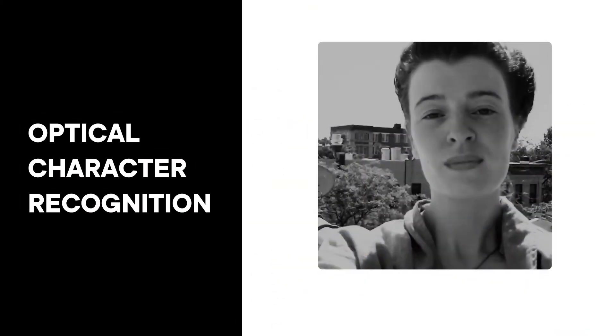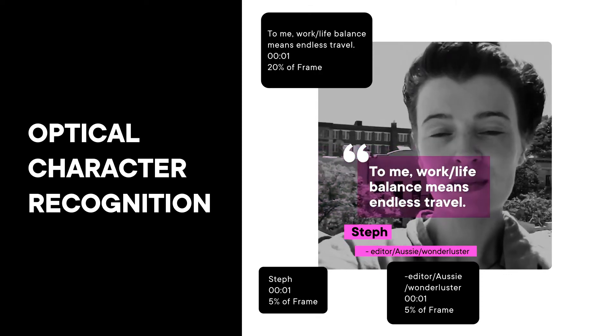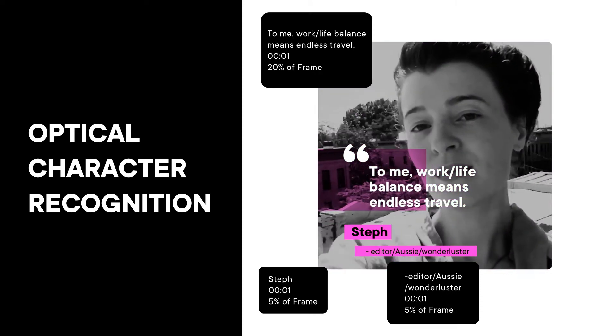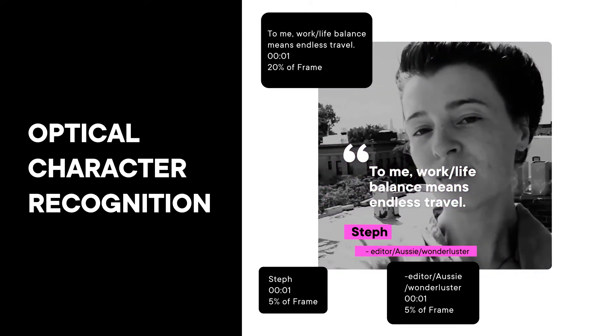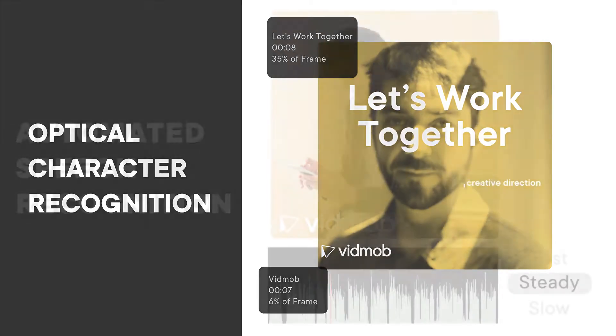The first is optical character recognition, which identifies not only when text appears in frame, but also how much visual real estate it covers.